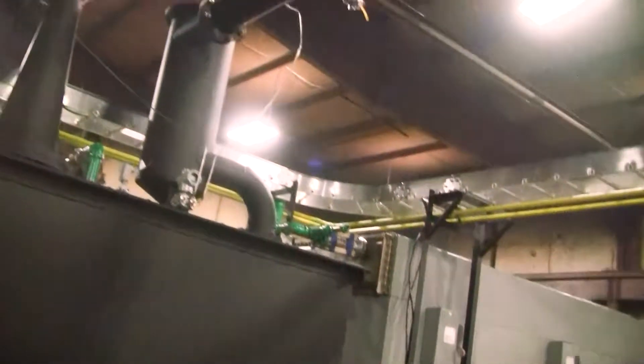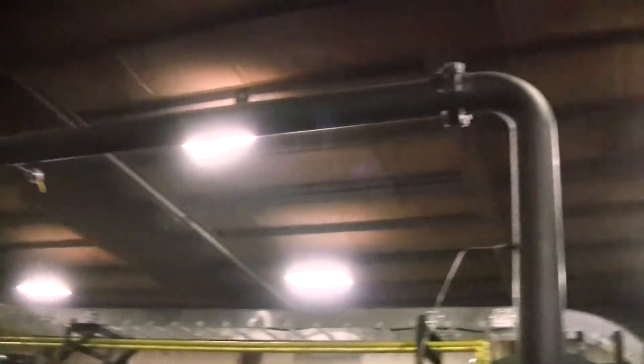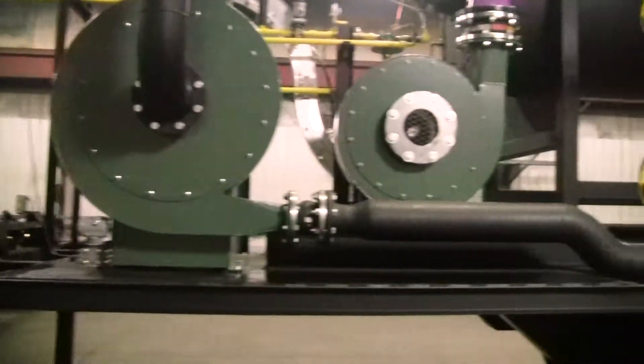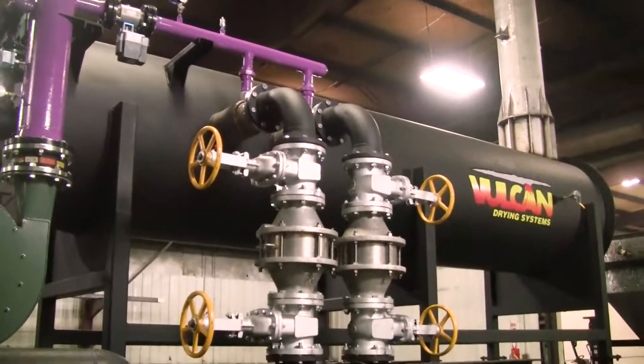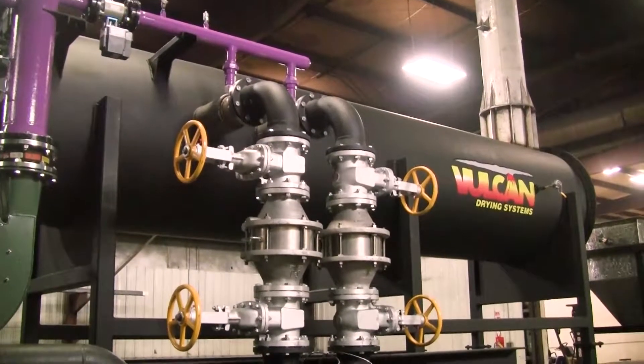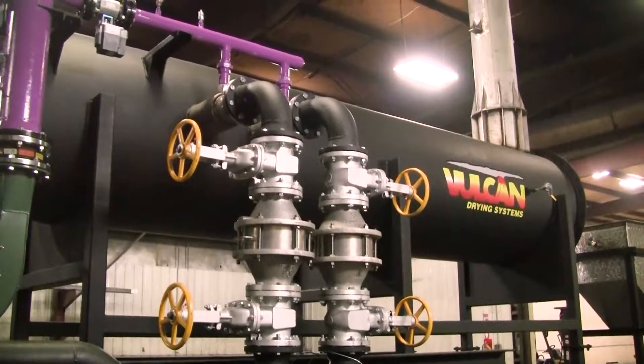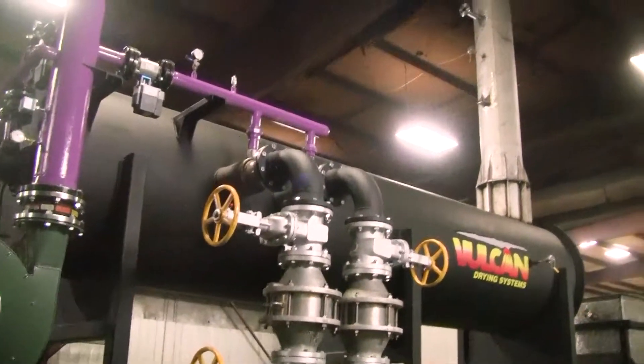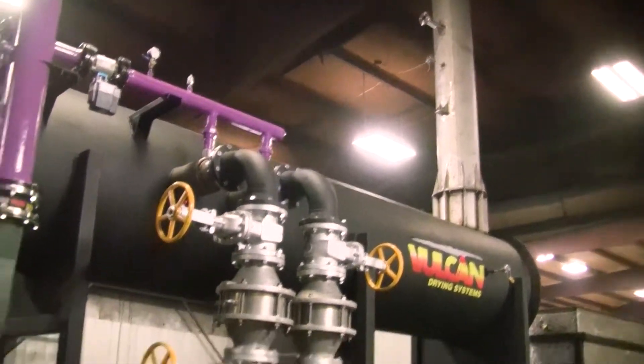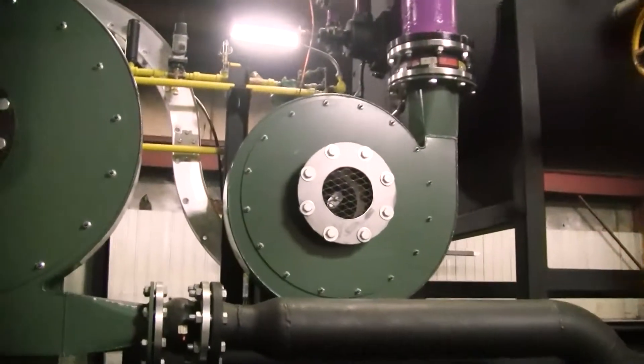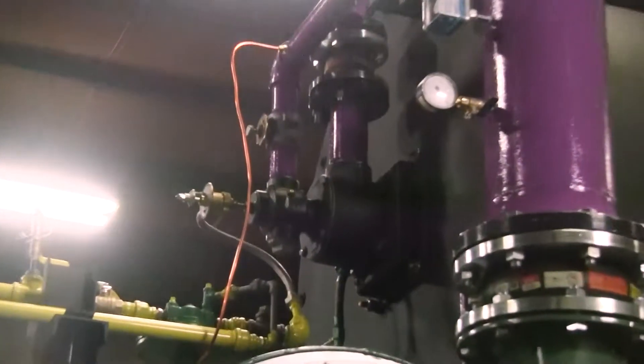As the vapor exits the second stage scrubber, it's pulled through this crossover duct to the IED fan, which feeds this thermal oxidizer, protected by redundant flame arresters, discharge stack with oxygen analyzer, combustion air blower, oxidizer burner.